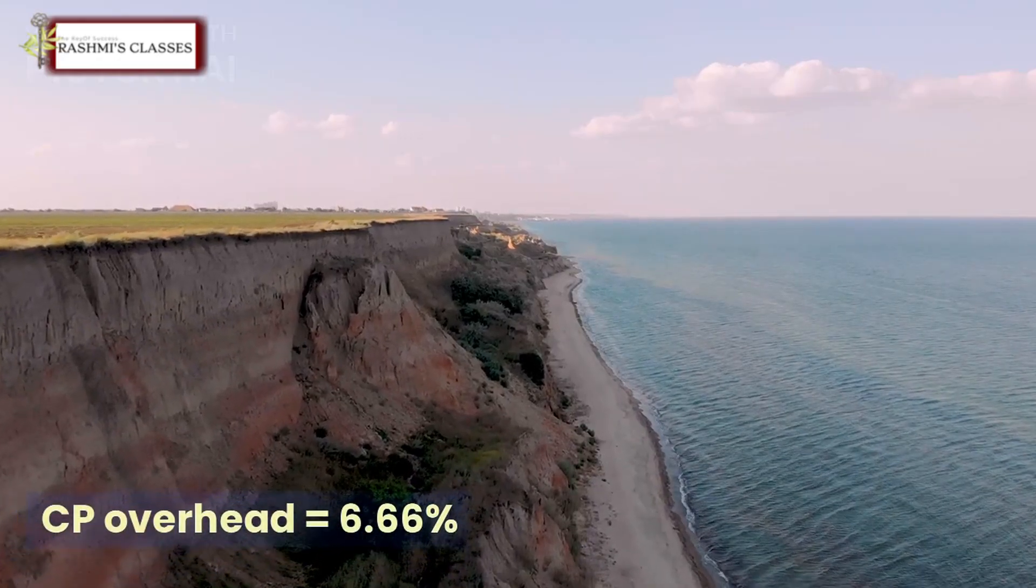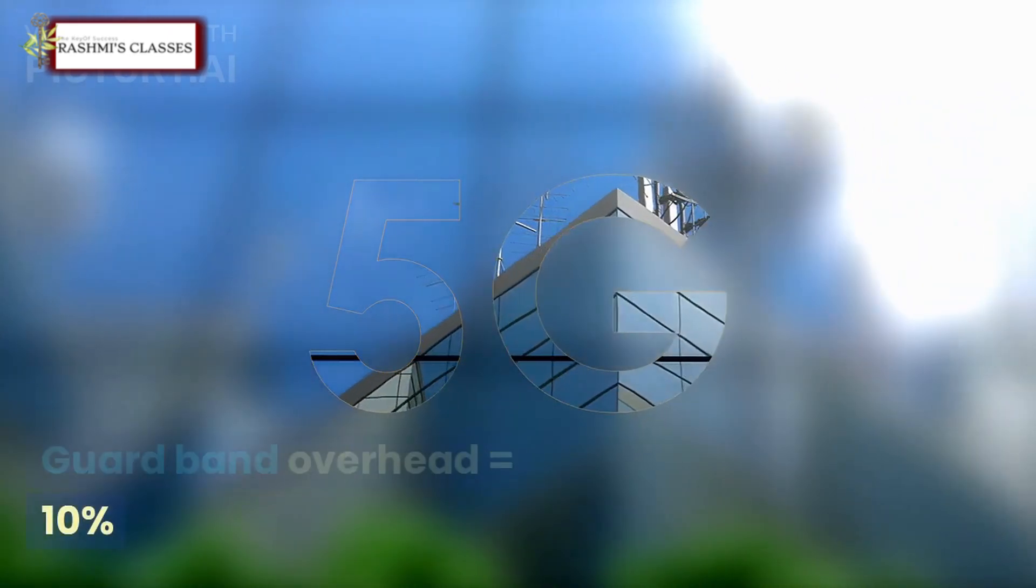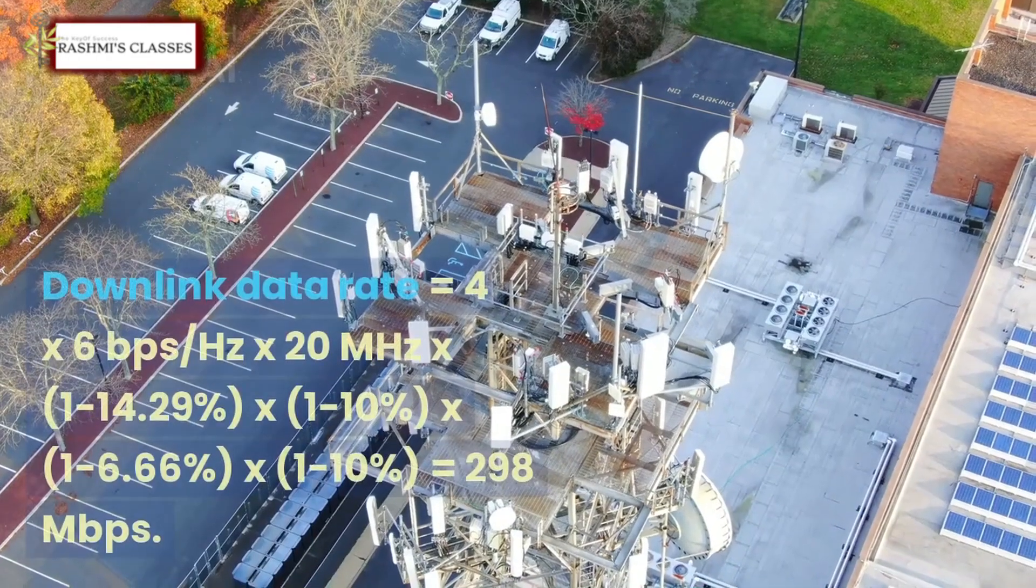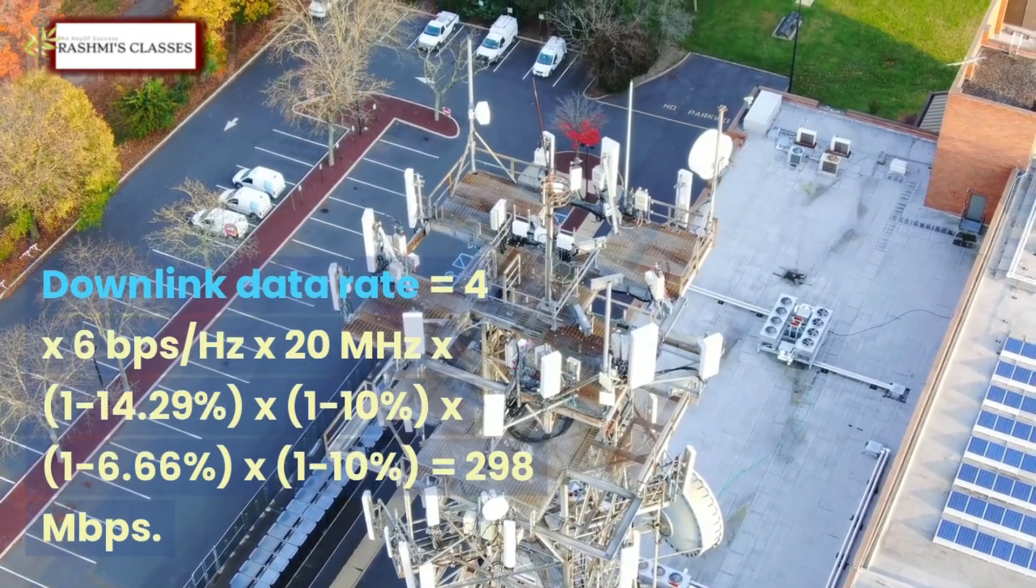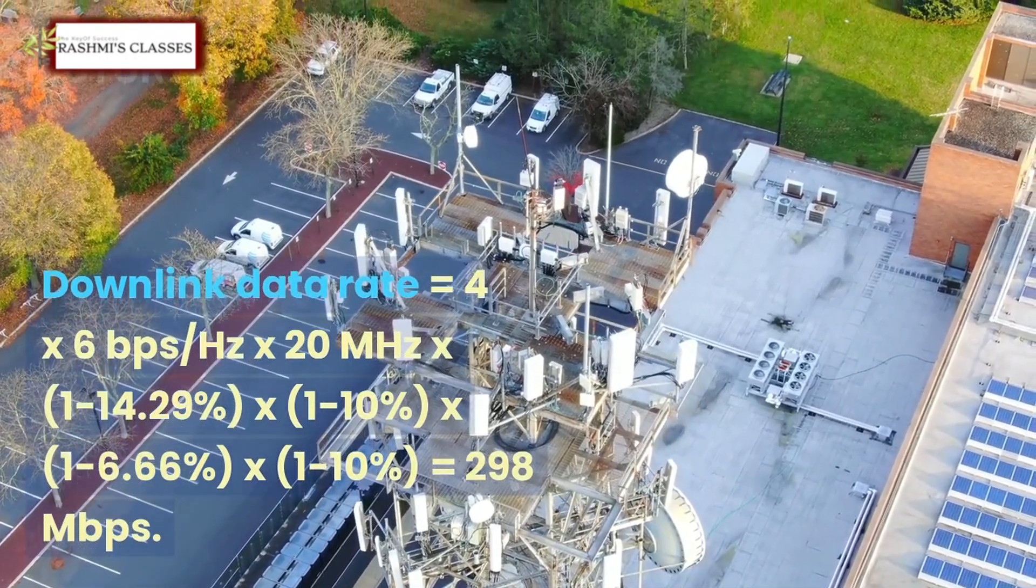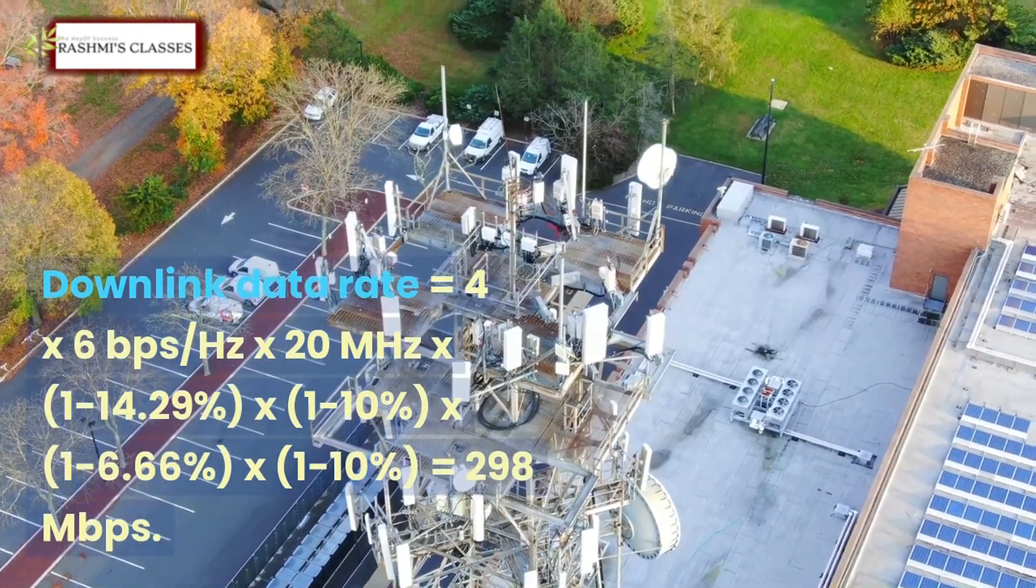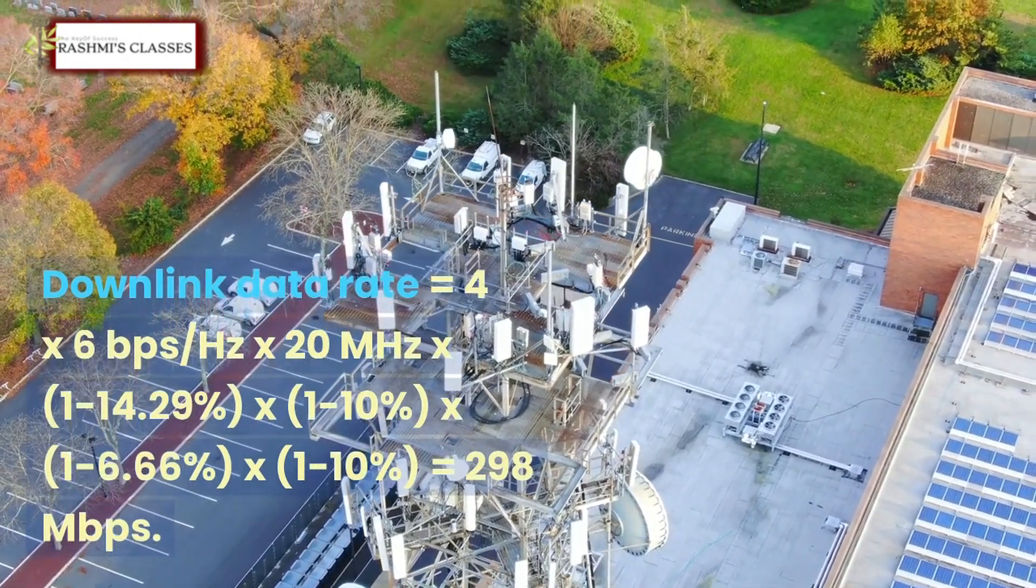CP overhead = 6.66%, guard band overhead = 10%. Downlink data rate = 4 x 6 bits per second per hertz x 20 MHz x (1 - 14.29%) x (1 - 10%) x (1 - 6.66%) x (1 - 10%) = 298 megabits per second.